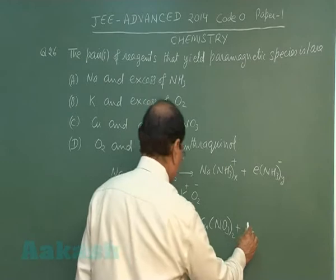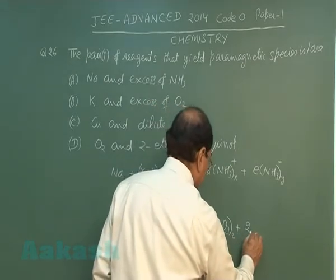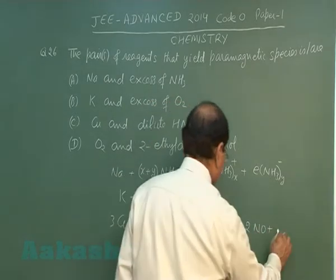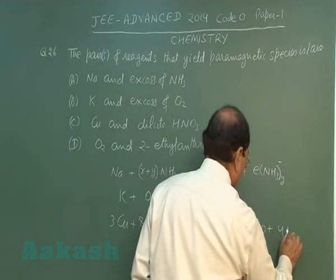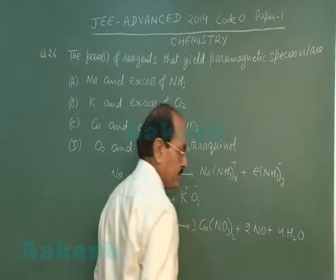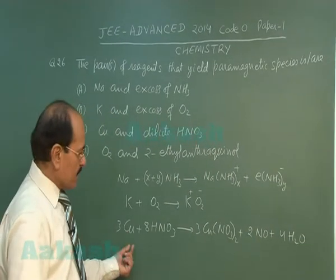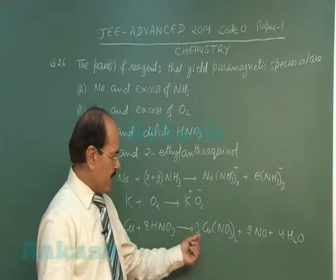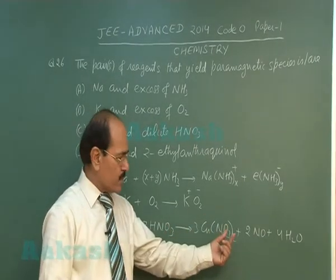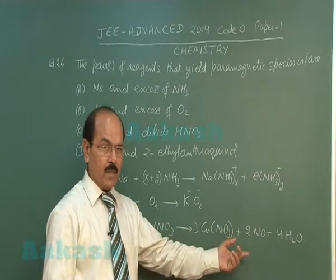Copper reacts with dilute nitric acid to give copper nitrate, nitric oxide, and water. Copper is oxidized and nitric acid is reduced to nitric oxide. Nitric oxide is paramagnetic.